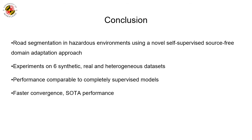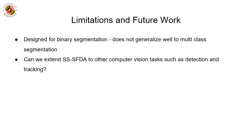In conclusion, we present a new method for road segmentation in adverse weather conditions using a novel self-supervised source-free domain adaptation approach. Through evaluations on six real and synthetic datasets, we show that our self-supervised model — which has access only to a pre-trained clear weather model and unlabeled target images — exhibits accuracy comparable to completely supervised models, with benefits in faster training time and state-of-the-art performance. A current limitation is that our approach is designed for binary segmentation and cannot perform well on multi-class segmentation. It would be interesting to investigate whether SFDA-based self-supervised learning could extend to other computer vision problems such as object recognition, image classification, and scene understanding.